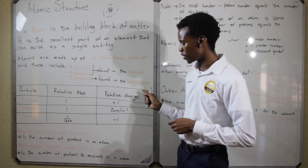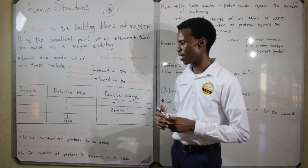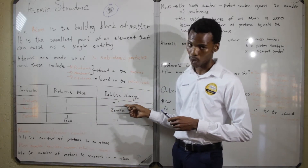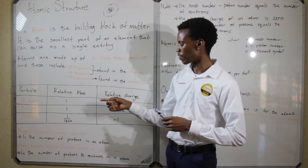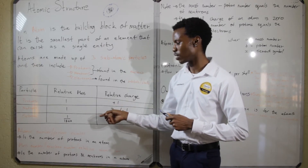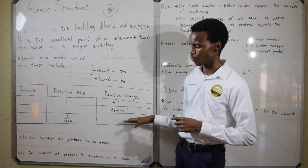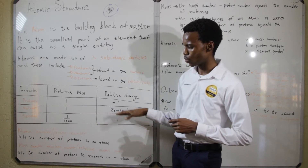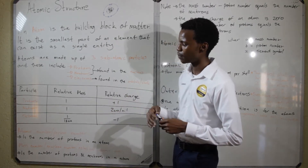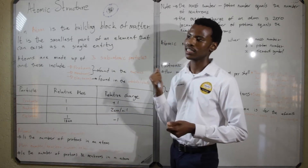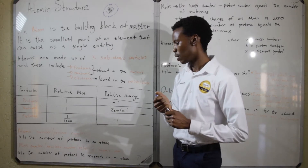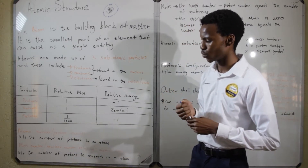The relative charge, on the other hand: protons have a relative charge of plus 1, neutrons have a relative charge of 0, while electrons have a relative charge of negative 1. So you guys need to be able to remember these numbers. They typically come in handy in terms of your paper 1 material, your multiple choice.